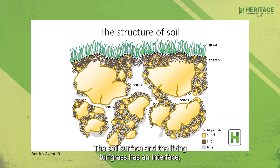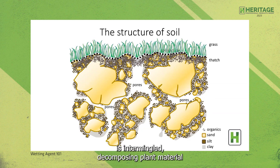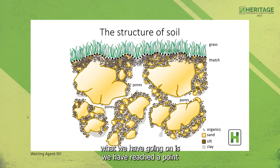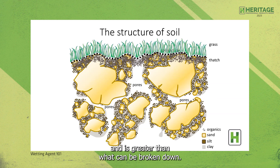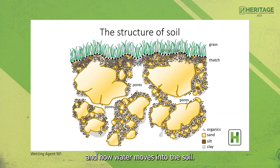The soil surface and living turf grass have an interface. Above it we have live grass, and below it, between the soil surface and the live turf grass crown, is the thatch layer. The thatch layer is intermingled decomposing plant material and living shoots, stems, and roots. We have stoloniferous turf grass types and rhizomaceous types — turf type tall fescue, bluegrass, and ryegrass are examples. At the thatch layer, the breakdown of organic matter being produced is less than what can be broken down, so we start to have accumulation. That thatch layer is very hydrophobic, and all of that — particle size, thatch, and how water moves into the soil — comes into play.